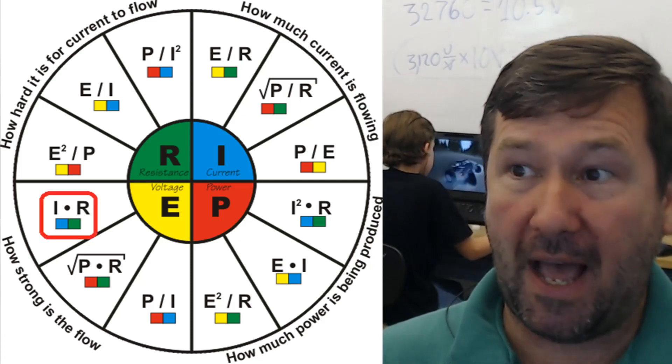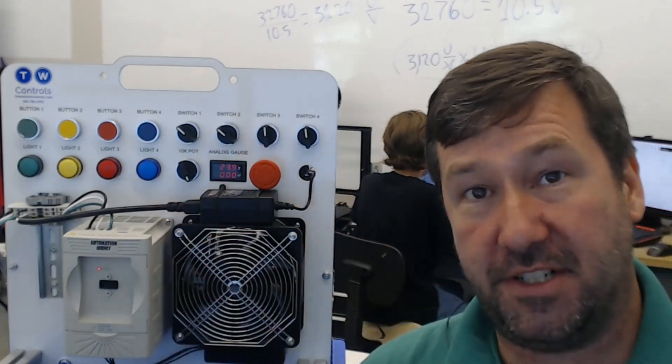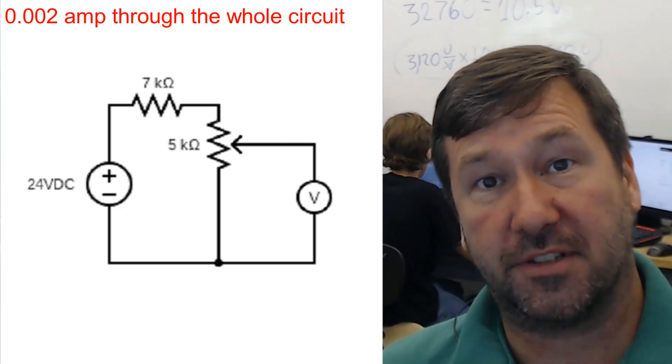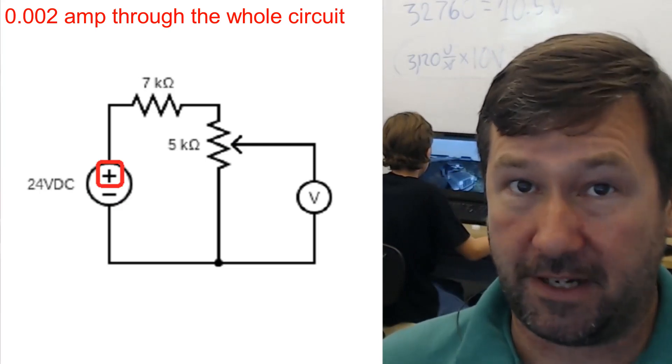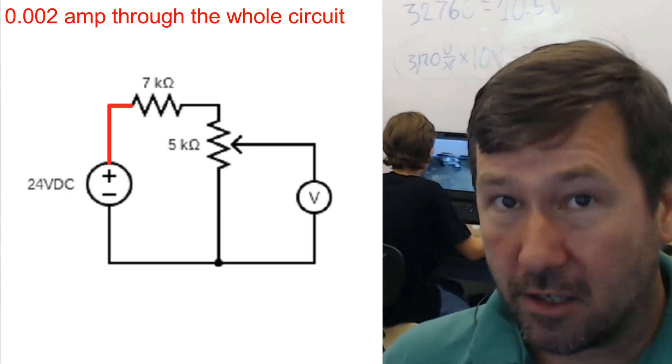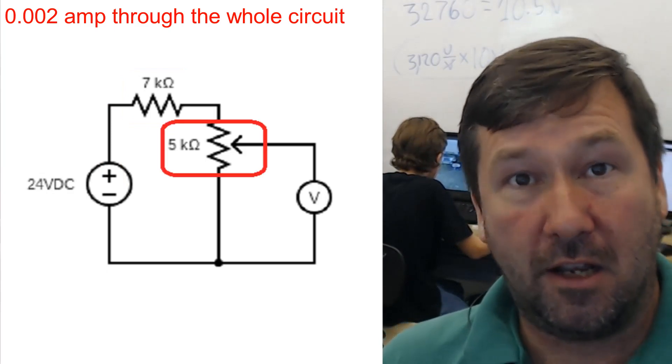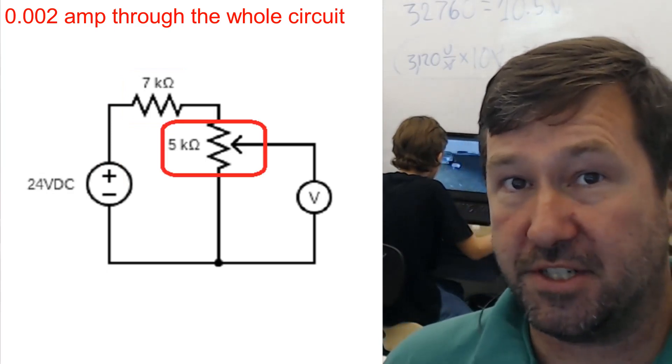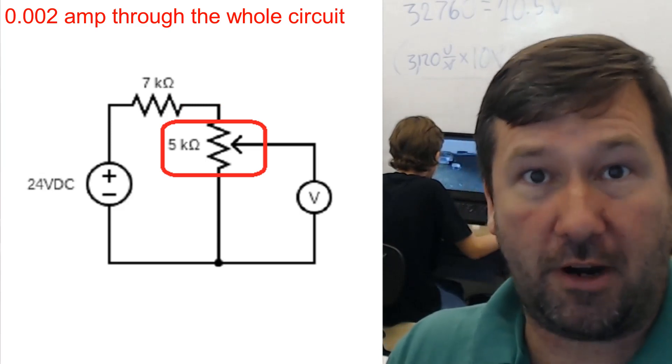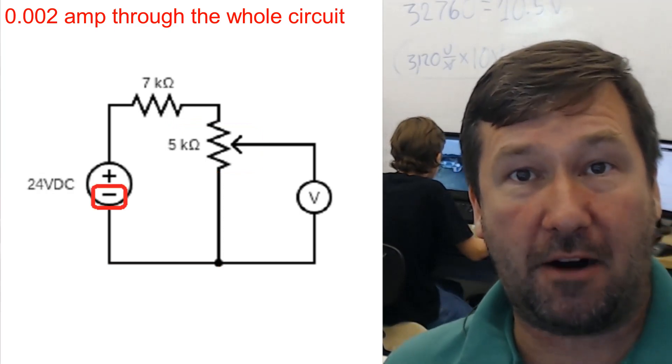So now if we go back, we want to know the voltage across our 5k resistor. We know that there's two thousandths of an amp running through this circuit. Now that is two thousandths of an amp that's coming out of our power supply going through this wire going into the 7k resistor, coming out into this wire, going through our 5k potentiometer, because remember the two outside terminals of our potentiometer are a resistor. Then it's going out of there through this wire and back to the common of our power supply.